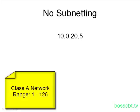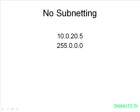We know that this is a class A network IP address, so we give it the default class A subnet mask: 255.0.0.0. We line the IP address up and put the subnet mask below it, and go through a simple process of comparison. We start with the first octet of both. If the subnet mask has a value of 255, we copy the value of the octet in the IP address. The first octet of the subnet mask is 255, and the first octet of the IP address is 10, so we copy the 10.